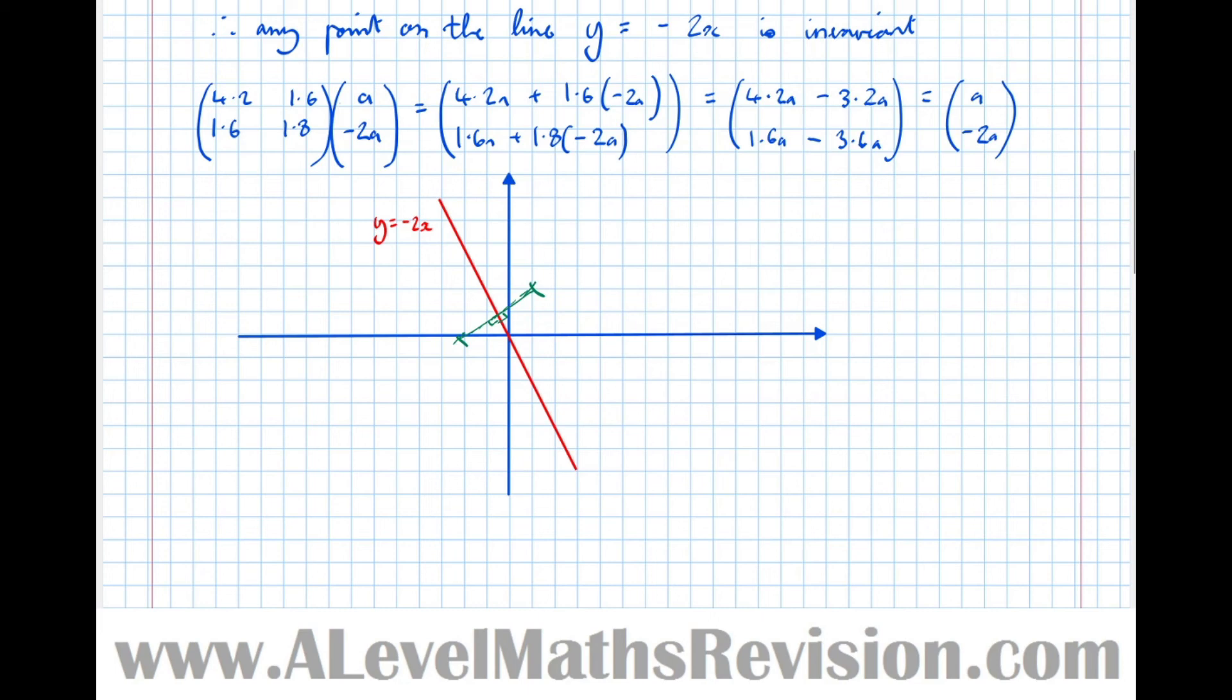Let's think about what points under this transformation wouldn't vary. Think of a point on the mirror line here. If the point actually lies on the mirror line, then the reflection won't have any effect on it. All of these points stay the same under the reflection through the line y equals minus 2x. All of these points on the mirror line are invariant under the linear transformation.